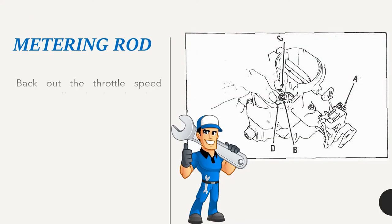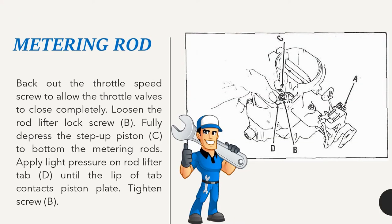Metering rod: Back out the throttle speed screw to allow the throttle valves to close completely. Loosen the rod lifter lock screw B. Fully depress the step-up piston C to bottom the metering rods. Apply light pressure on rod lifter tab D until the lip of tab contacts piston plate. Tighten screw B.